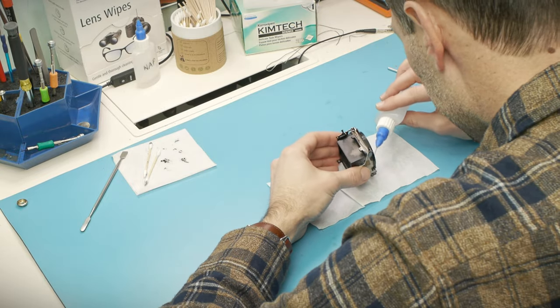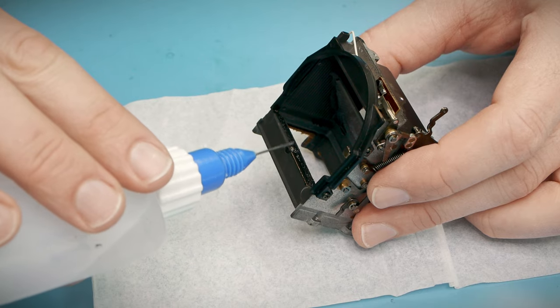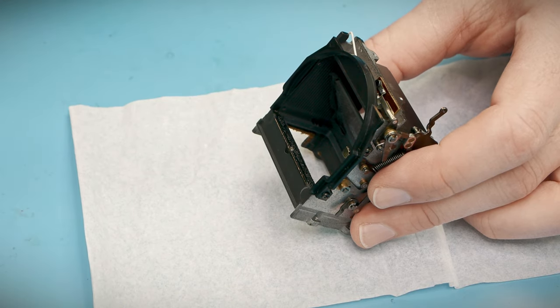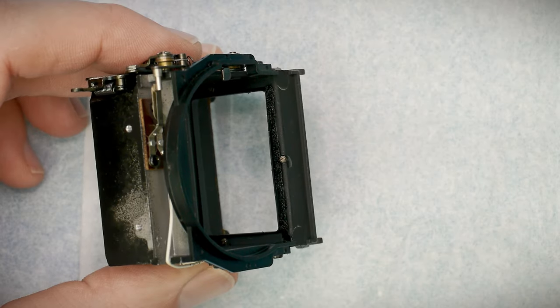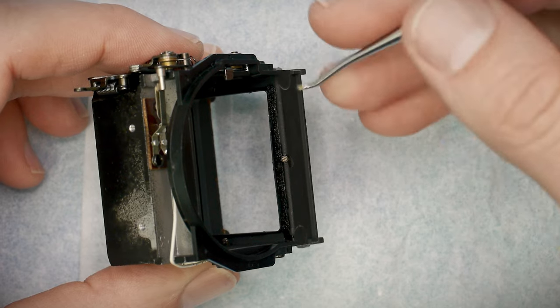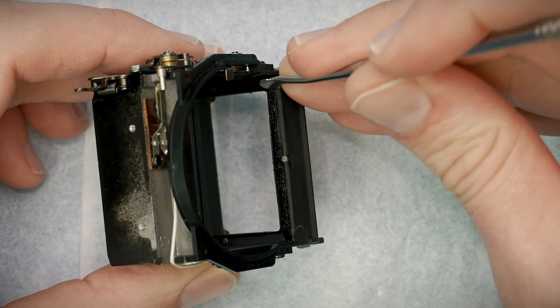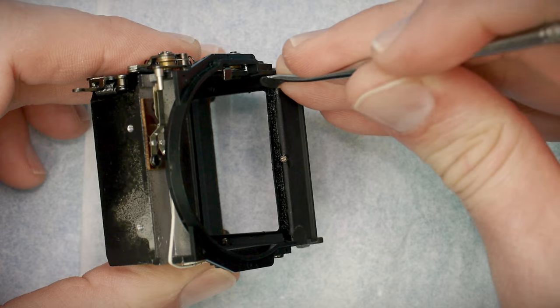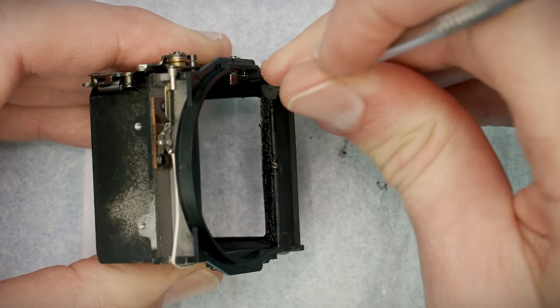The first one is actually not a light seal like most of the other foam around here, but the mirror bumper. It gives the reflex mirror a nice soft place to land when the spring throws it to the top of the mirror box. Otherwise it would be slamming into bare metal.